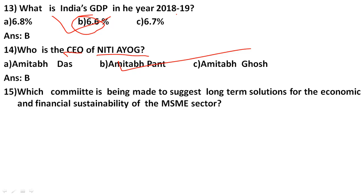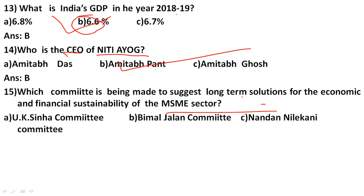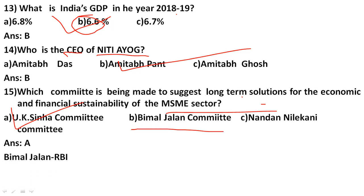Which committee is being formed to suggest long-term solutions for economic and financial sustainability of the MSME sector — that is Micro, Small and Medium Enterprises? The options are UK Sinha Committee, Bimal Jalan Committee, and Nandan Nilekani Committee. The correct answer is option A: UK Sinha Committee. Note: Bimal Jalan Committee is related to the RBI reserve fund board.